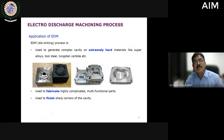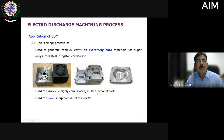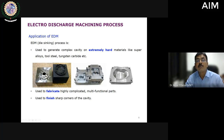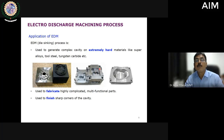Regarding applications, EDM is mainly used for die sinking — to generate complex cavities on extremely hard surfaces like super alloys, tool steel, and tungsten carbides. It can be used to fabricate highly complicated shapes and to finish sharp corners of cavities, because conventionally you cannot have internal sharp corners. A radius equivalent to the tool radius is inevitably left during conventional machining, but if you want these corners to be very sharp, such operations must be performed as a secondary or finishing operation.